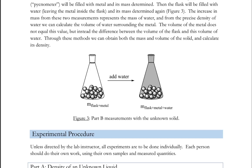To get the volume of the metal, what we will do is fill the flask with water. We will measure the mass of the flask, the metal, and the water. When we subtract from that the mass of the flask and metal alone, that gives us the mass of the water it takes to occupy the remaining volume of the flask. We will go from that mass to volume using the density of the water. That gives us the volume of the water that's in the flask along with the metal. We knew the volume of the flask from Part A, and now we have the volume of the water in the flask from Part B.